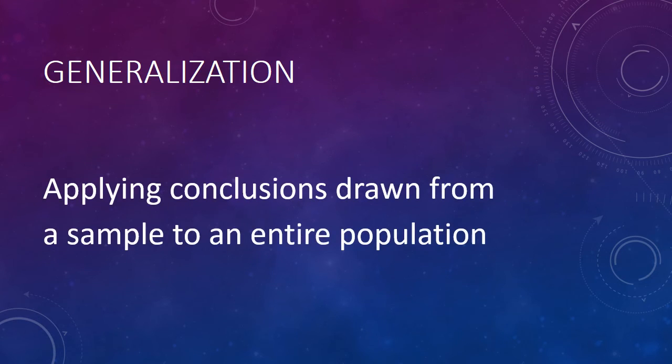We gather information about samples with the goal of making inferences about the entire population. We compute numerical summaries of data gathered for the sample — that is, statistics — and then use these to make inferences about what the numerical summary would be for the entire population, that is, the parameter. This process is called generalization: applying conclusions drawn from a sample to an entire population. For example, if student test scores in a sample were higher for students enrolled in a study skills program, we generalize that test scores across the whole university would be higher on average for enrolled students — moving from this particular sample to the population of all students at the university.